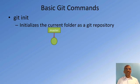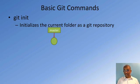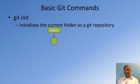git init initializes the current folder as a git repository, and when it initializes the folder, it will mark that folder as master — this is the master branch. We will not deal with branches in this course; we will only be working with the master branch in this specialization. This is the initial point of our repository.